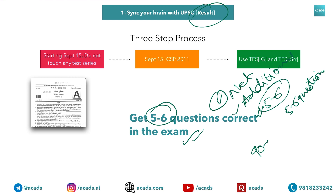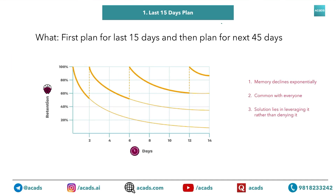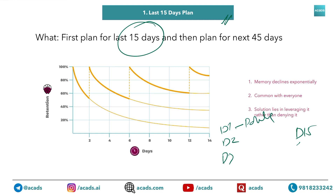Now coming to the second strategy, which is also very crucial — this is about the last 15 days. What I am suggesting is: first, plan for last 15 days — what is going to happen day 1, day 2, day 3 up to day 15. There will be around 15 to 20 questions from modern history, organizations, current affairs, and whatever your weak areas are. Plan for 15 days, and then use the next 45 days to complete everything needed for those last 15 days.